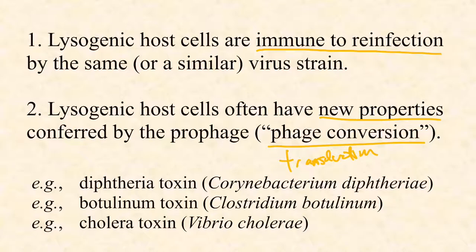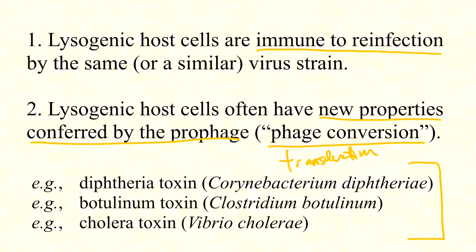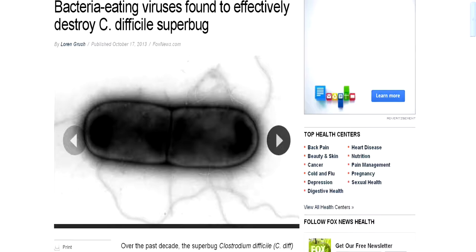This process of phage conversion can confer new properties on bacteria. Three key examples: Corynebacterium diphtheriae causes diphtheria — the diphtheria toxin is associated with a lysogenic phage, now cryptic and permanently in the genome. Clostridium botulinum's botulinum toxin is associated with a lysogenic phage. Vibrio cholerae's cholera toxin is also associated with a lysogenic phage. It's very likely these original strains were relatively harmless and became pathogens through phage conversion.